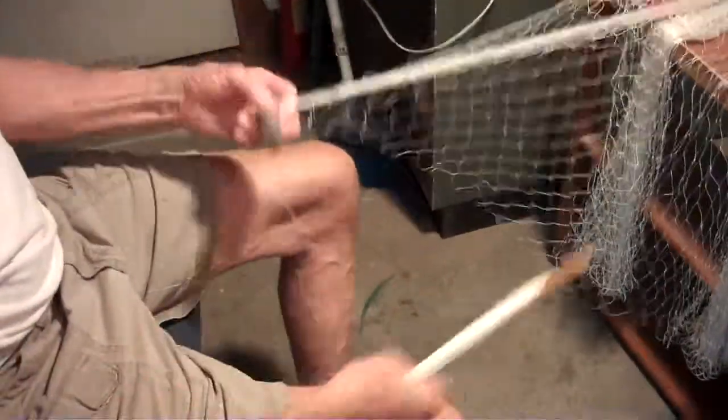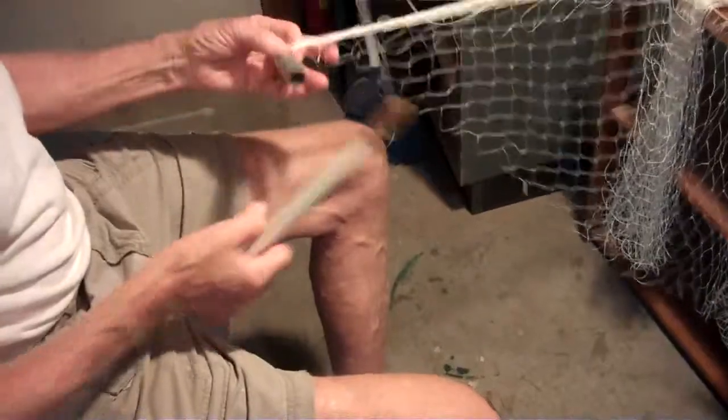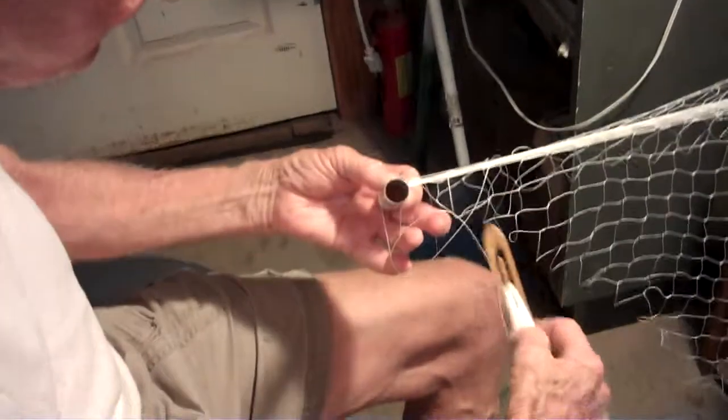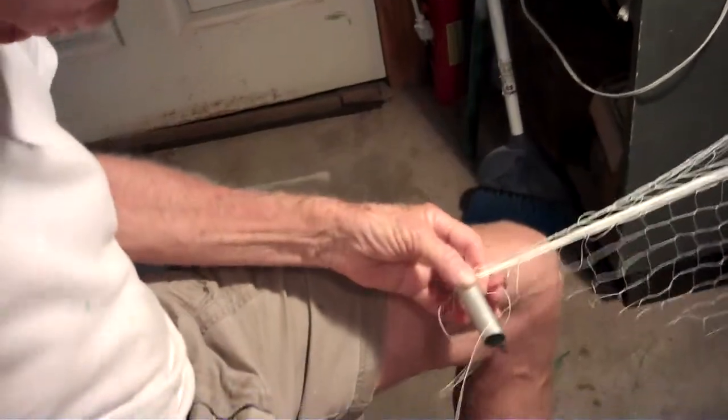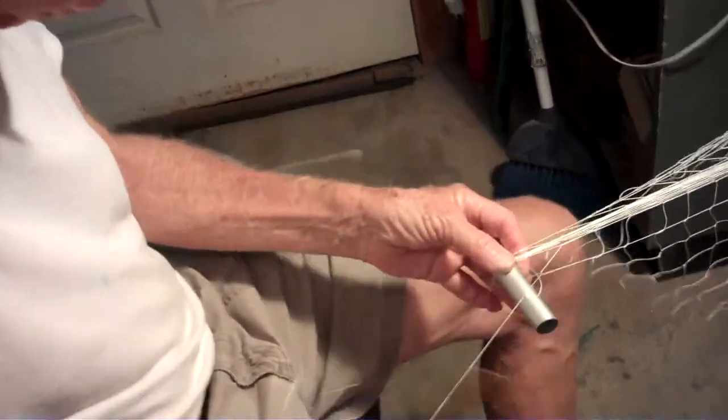But anyway, I've been trying to learn this fisherman's knot he calls a flying Dutchman. And so we've moved over to the net with a little bit bigger mesh to see if it makes it a little easier to see what's going on here.